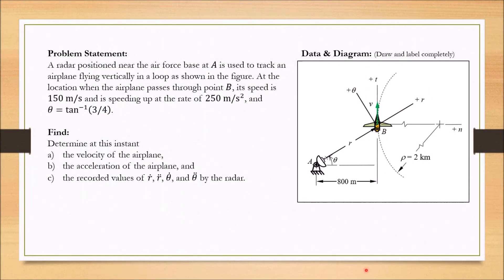A radar positioned near the air force base at A is used to track an airplane flying vertically in a loop as shown in the figure. At the location when the airplane passes through point B, its speed is 150 meters per second and is speeding up at the rate of 250 meters per second squared. And theta equals tangent inverse of 3 over 4.